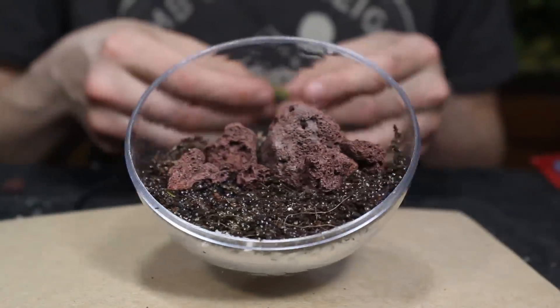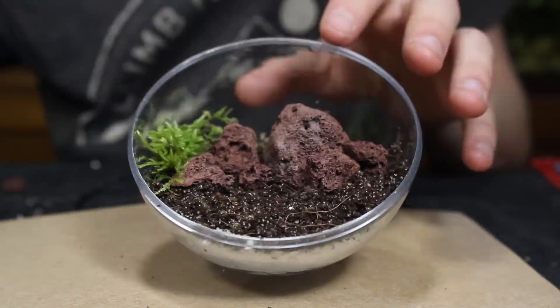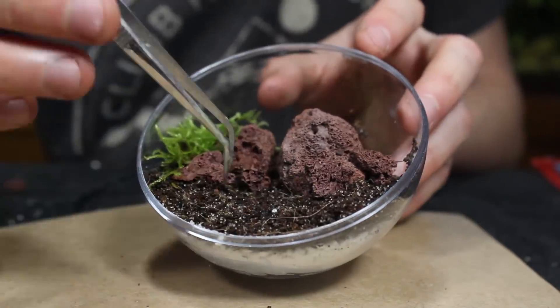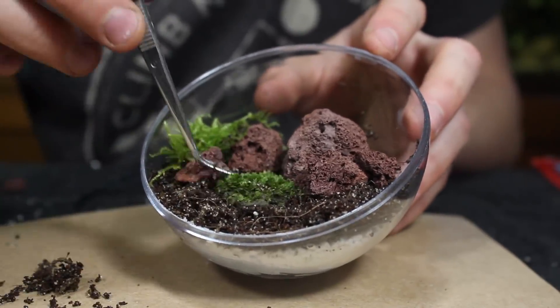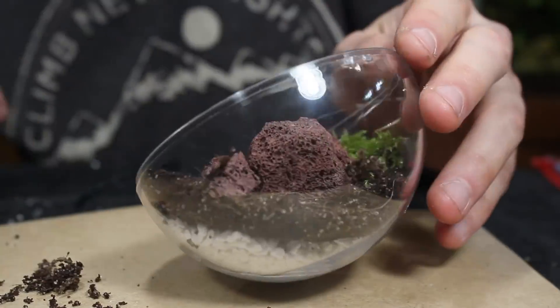Then I proceeded to plant the terrarium exclusively with moss, making this a mossarium. I used various types of moss and in case you're wondering, I'll put the names up at the end of the video.